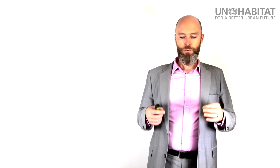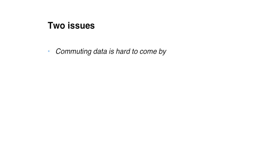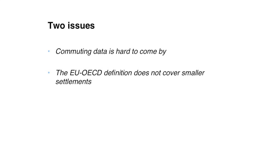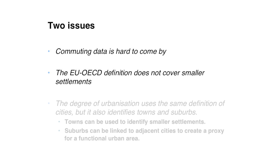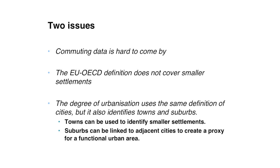However, to apply this to the globe, we have two issues. The first is that commuting data is hard to find — not just in low-income countries, but in all countries. And the EU-OECD definition doesn't cover smaller settlements. So we need to look further. We have in the EU a definition called the degree of urbanization. It uses the same definition of cities as in the EU-OECD definition, but it also identifies towns and suburbs. Towns can be used to identify smaller settlements, and suburbs can be linked to adjacent cities to create a proxy for the functional urban area we just saw.